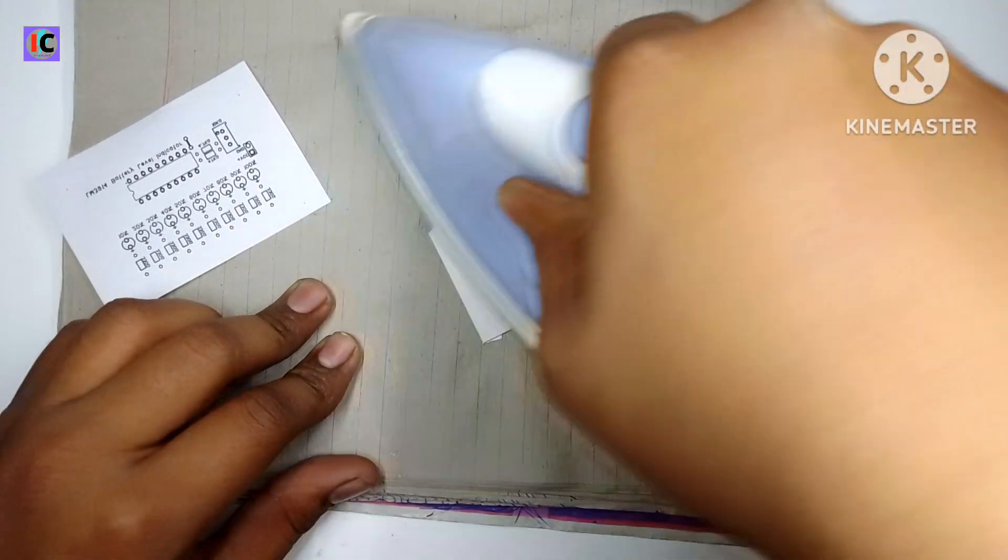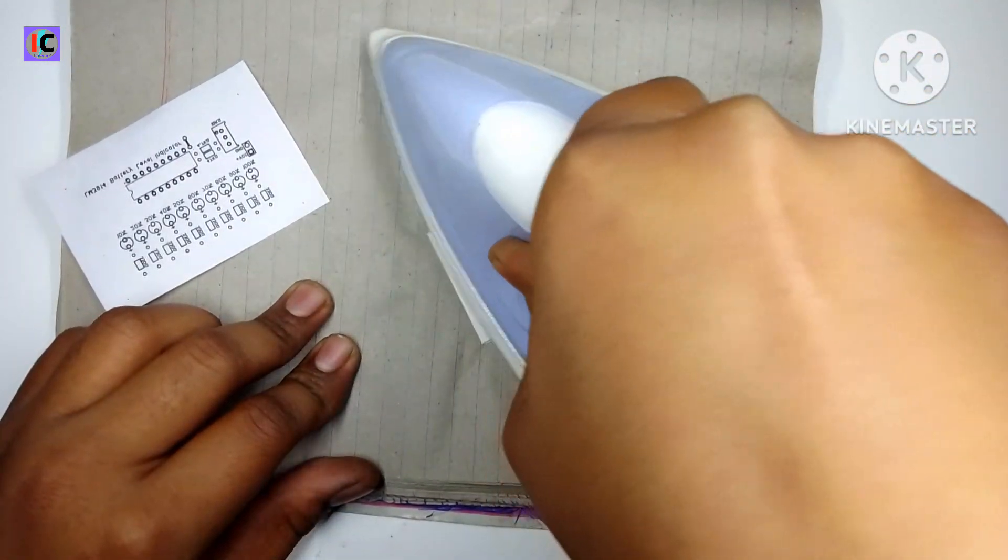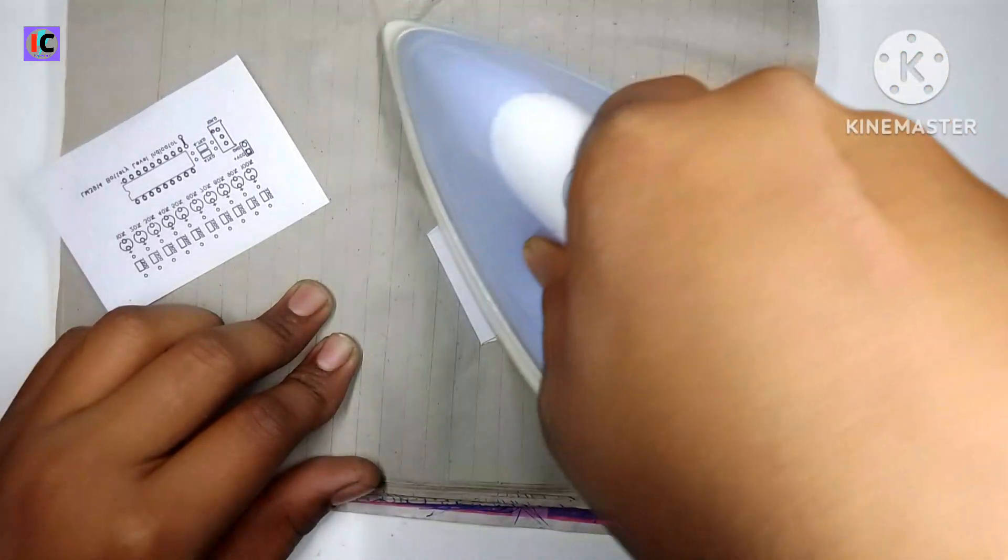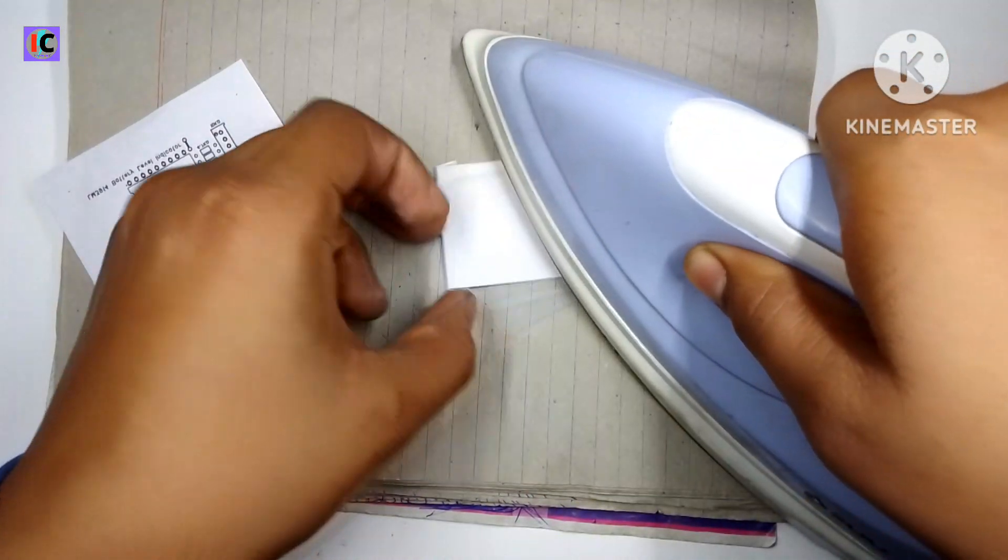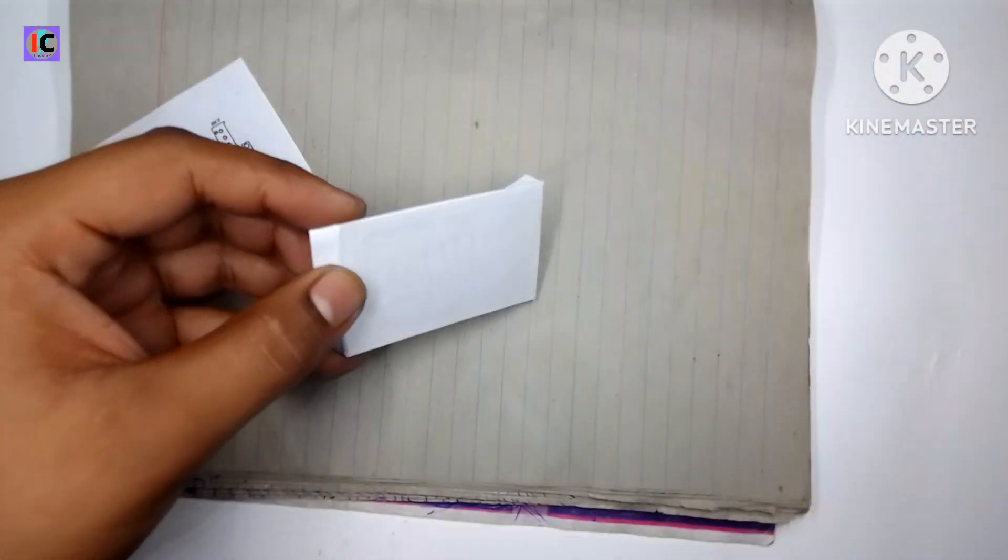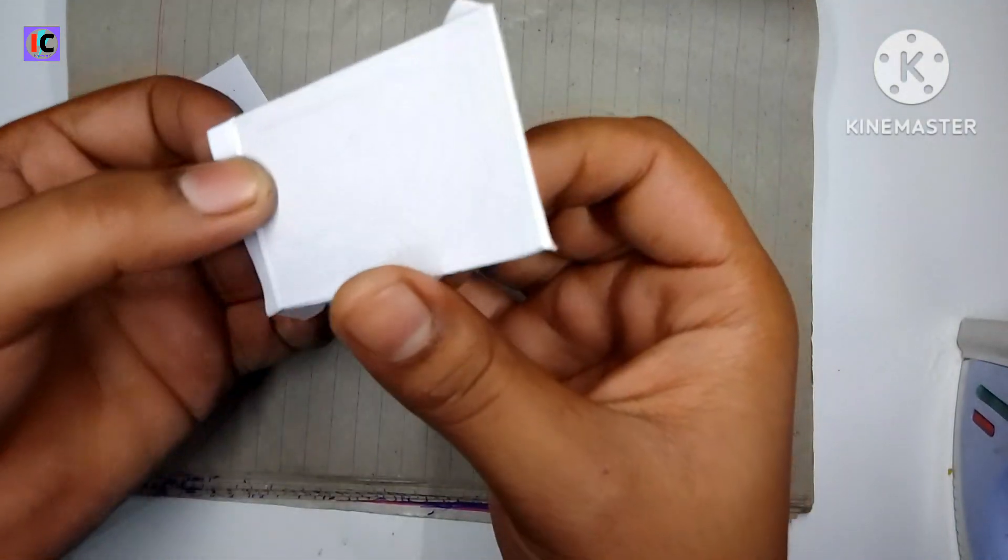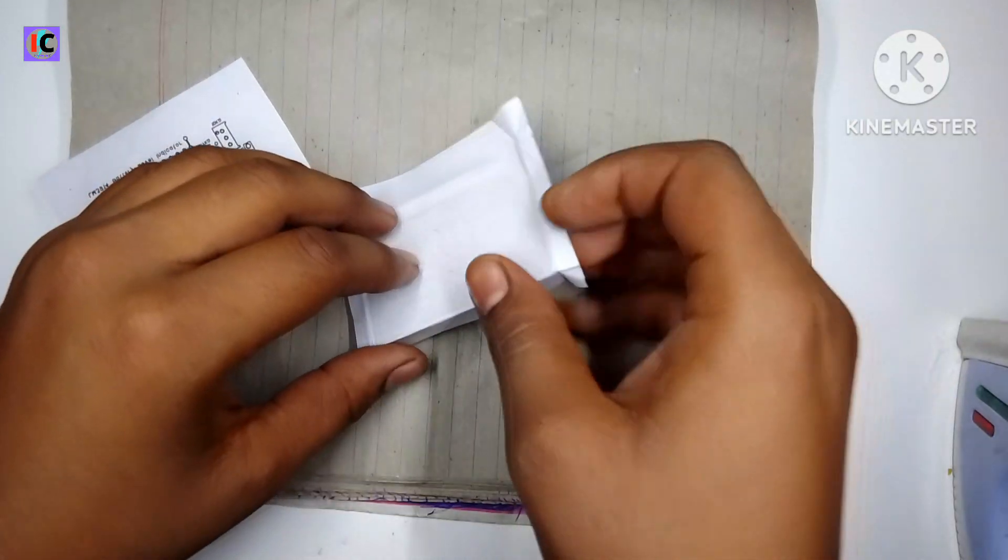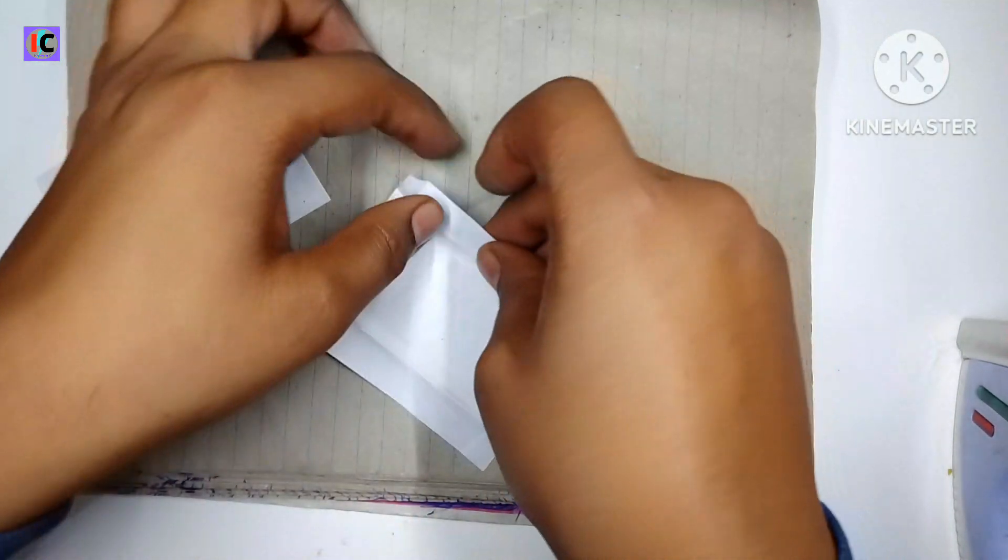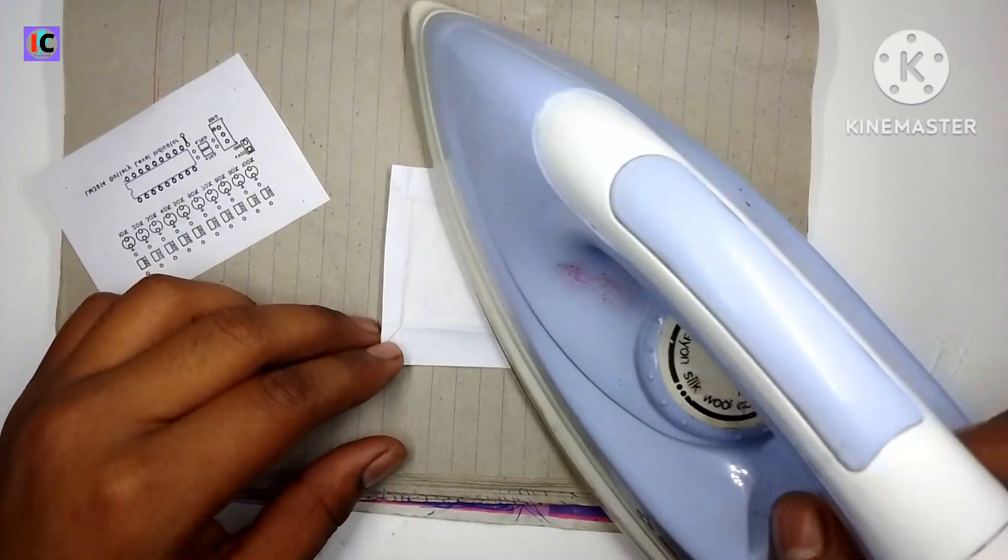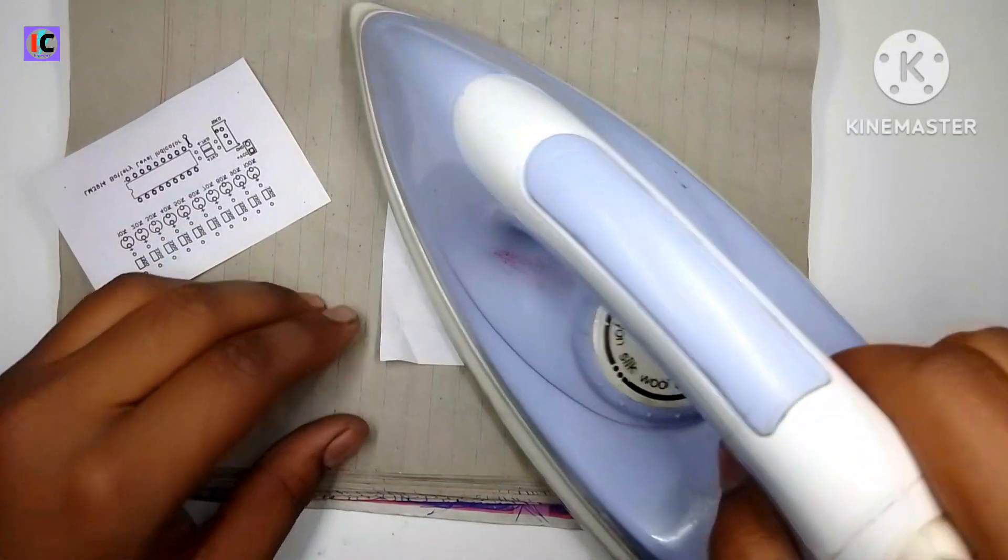Generally heat all the surface of the PCB. Now we are removing the paper from the PCB. As you can see, I am again heating the PCB as before.